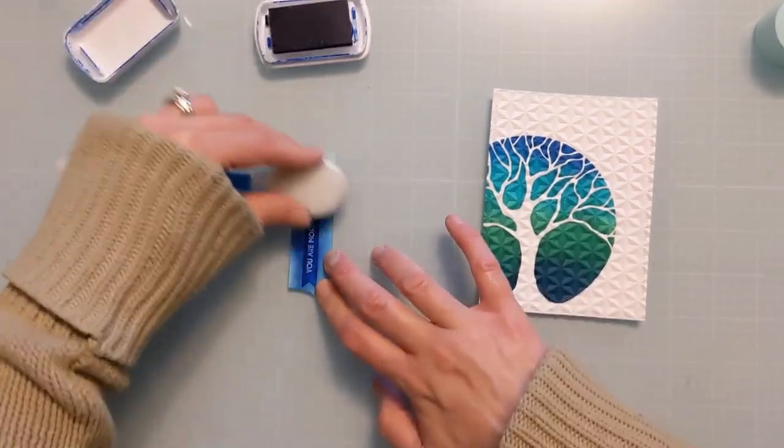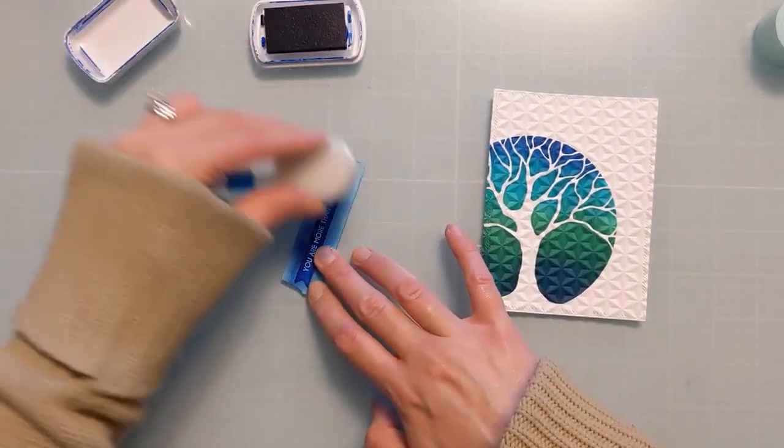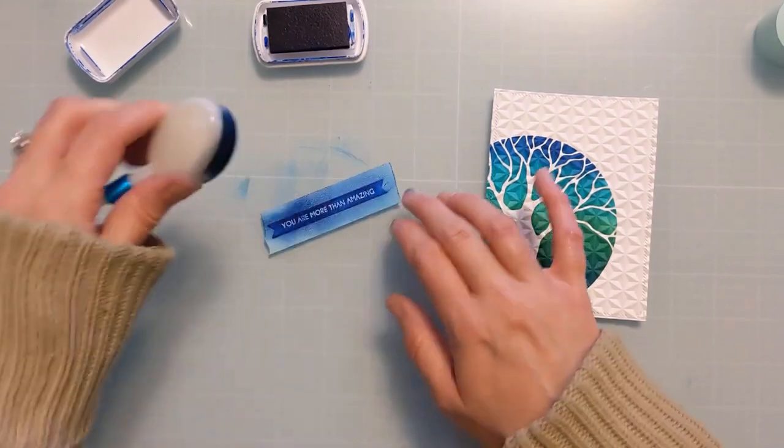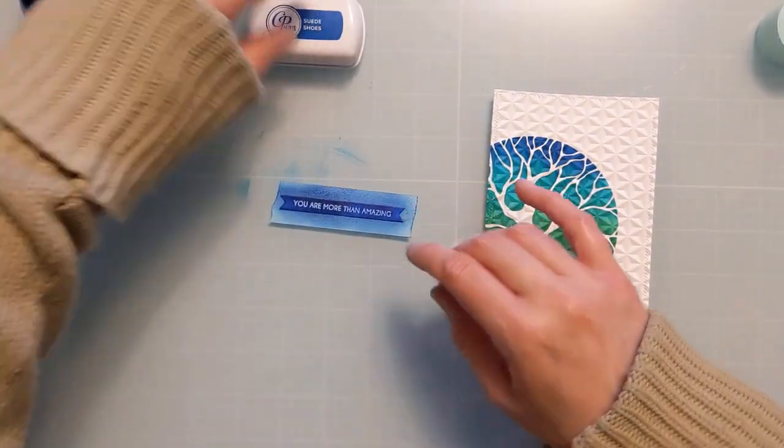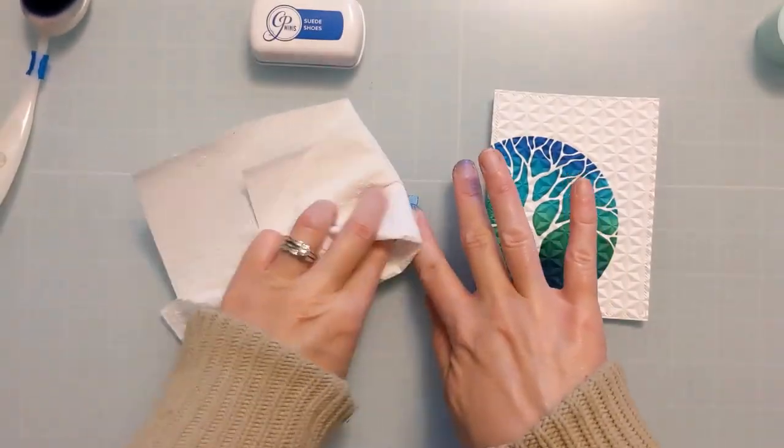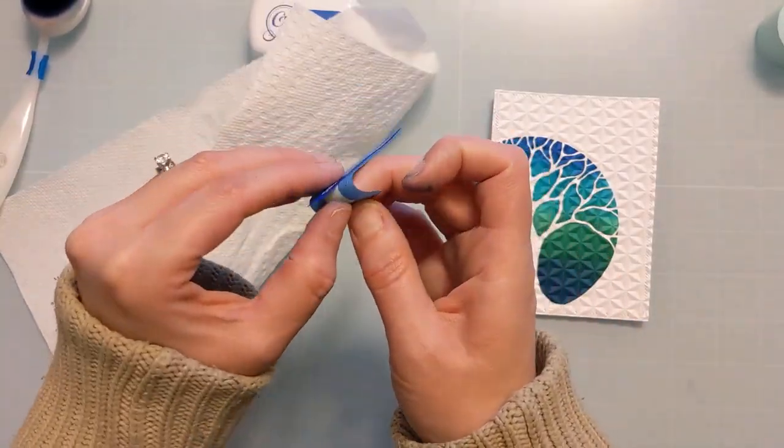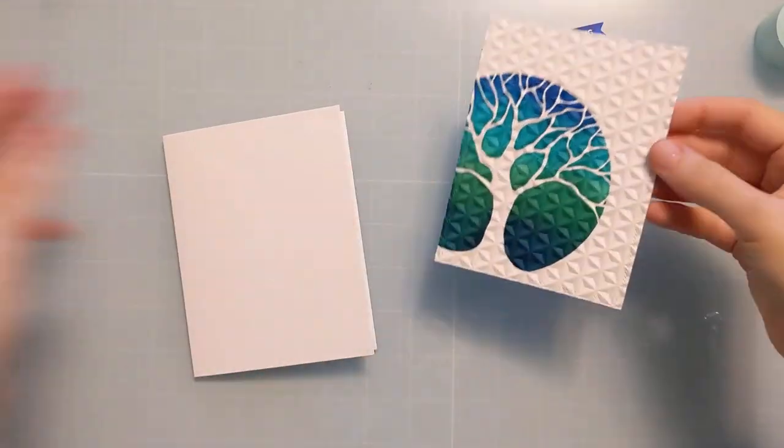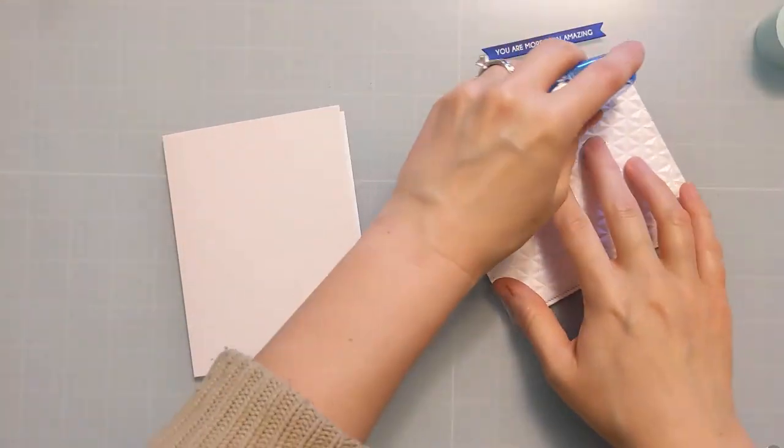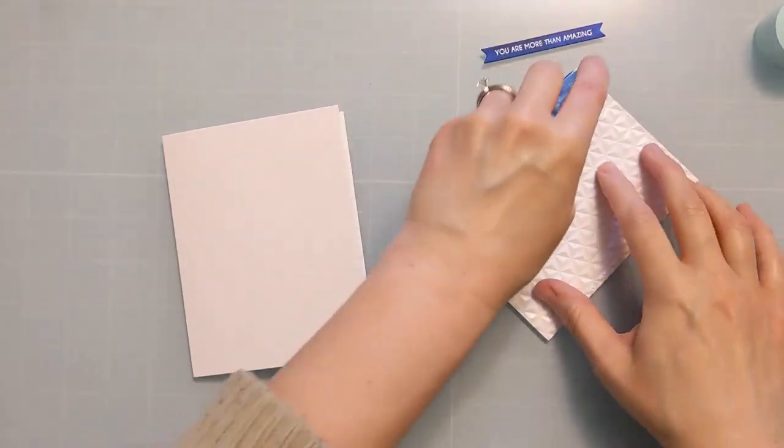So this is a resist technique. So you emboss either clear or white on a white piece of cardstock, and then you can custom color it to whatever you need. So I'm using that suede shoes and really saturating this little sentiment strip, and then wiping off the excess with my paper towel. And now I have a custom colored sentiment strip that perfectly matches the front of the card.